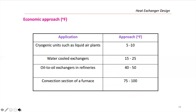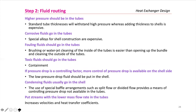Economical approach temperatures vary by application. For cryogenic units such as liquid air plants: 5–10°F. Water-cooled heat exchangers: 15–25°F. Oil-to-oil heat exchangers: 40–50°F. Convection section of a furnace: 75–100°F. Once you calculate your approach, verify it is within the economic range for your application. Step two is selecting which fluid goes through the shell and which goes through the tubes.